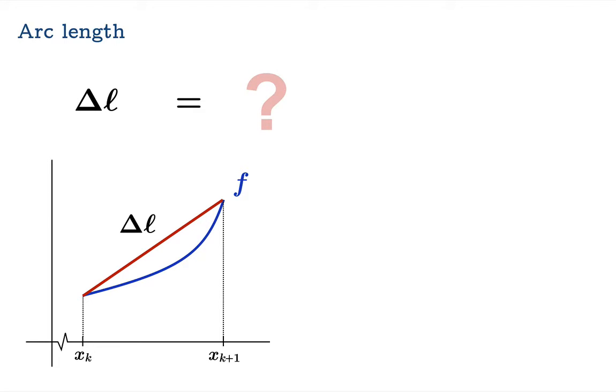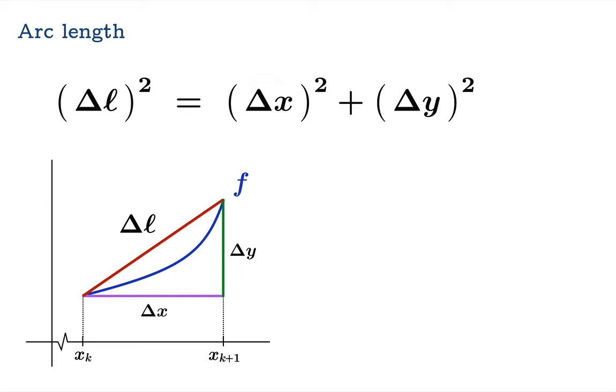And how do we calculate this? Well, actually it's pretty easy if we could measure delta x's separation between these two arguments and delta y, the amount that the value of the function changes over that interval. The Pythagorean theorem would tell us that delta L squared is equal to delta x squared plus delta y squared.